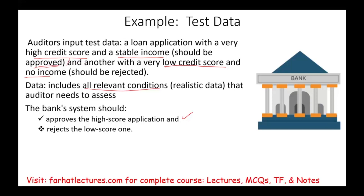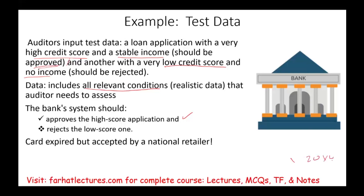Here's a real story: my wife and I were buying from a national retailer, and her credit card was expired — the expiration date had passed. Nevertheless, she was able to use that expired card to make a purchase, and we didn't notice until after the fact. That is a major internal control issue: the system was accepting an expired credit card. This is exactly the kind of test that can be done — testing a credit card to see if it goes through or not. That's what test data testing is.